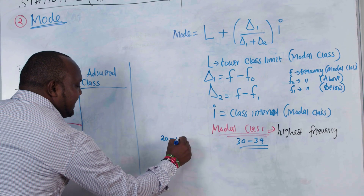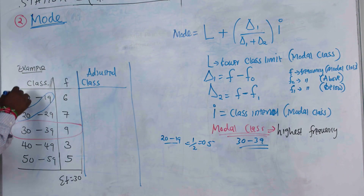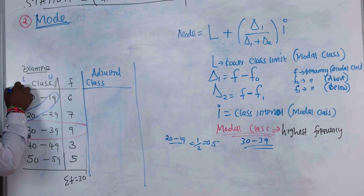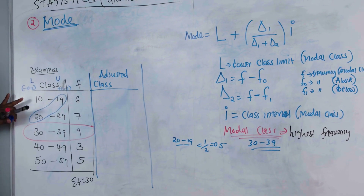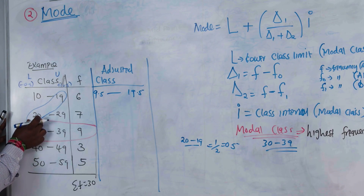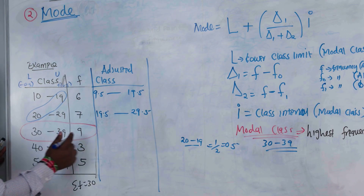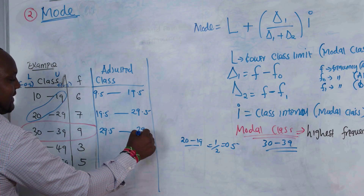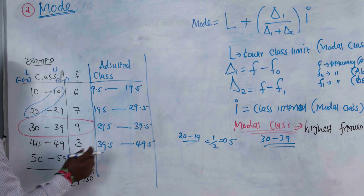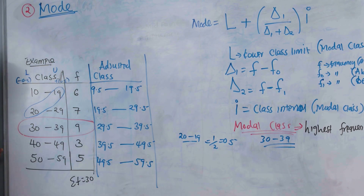The difference between 19 and 20 is 1, so divide by 2 to get 0.5. On the lower class limit, subtract 0.5; on the upper class limit, add 0.5. So 10–19 becomes 9.5–19.5, then 19.5–29.5, then 29.5–39.5, then 39.5–49.5, and 49.5–59.5. That is how we get the adjusted class limits.